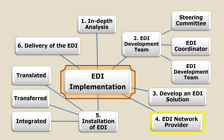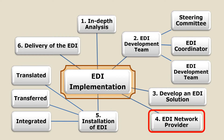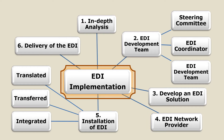Next is the EDI network provider. The business organization has to choose a network service provider, because the sending and receiving companies need a communication network. There may be a direct link or there may be a Value Added Network. The business organization chooses either a direct link or an EDI Value Added Network based on pricing and security features.